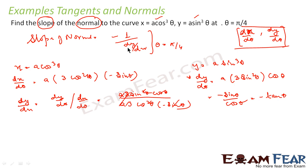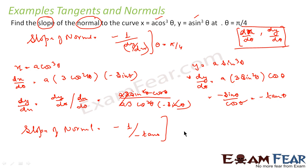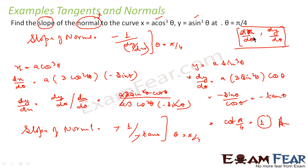That is the value of dy/dx. Now applying the formula: slope of normal = −1/(dy/dx) = −1/(−tanθ) = cotθ. At θ = π/4, that is cot(π/4) = 1. So the slope of the normal to this curve at θ = π/4 is 1.